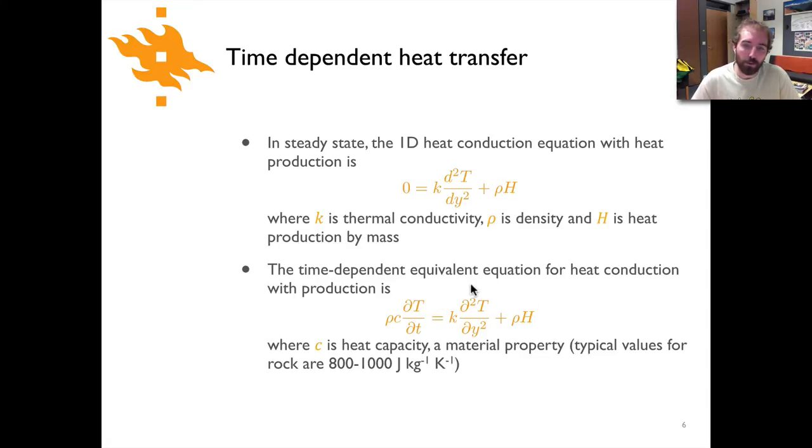So now over here we have the same thing on the right, but on the left side we have rho times c, times dT/dt. Rho is simply density again, c is the heat capacity, and this dT/dt is the change in temperature with time. And so now that's equal to the same thing we had on the right side before.